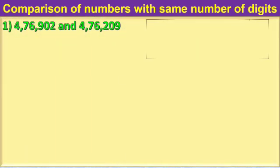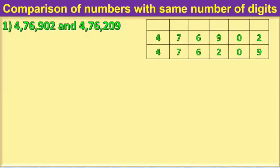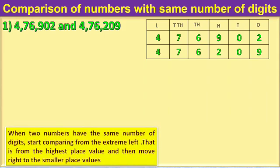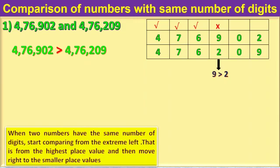When two numbers have the same number of digits, start comparing from the extreme left — that is, the highest place value — and then move right to the smaller place values. In the first example, digits at the lakhs place, 10,000th place, and 1,000th place are the same, but digits at the hundreds place are different. That is, 9 hundreds is greater than 2 hundreds. Therefore, 4,76,902 is greater than 4,76,209.